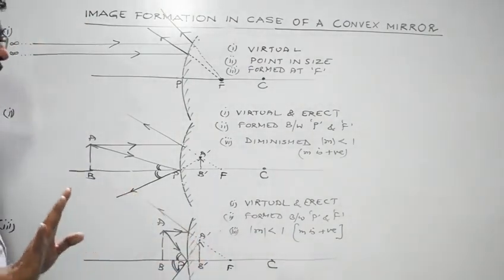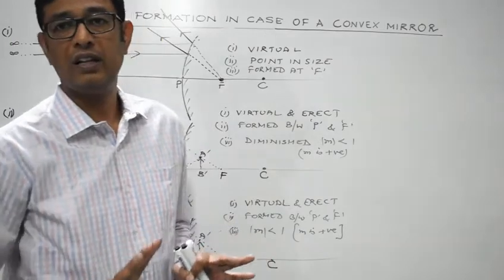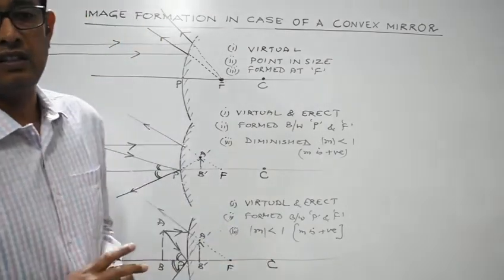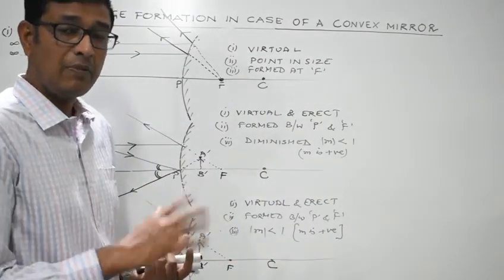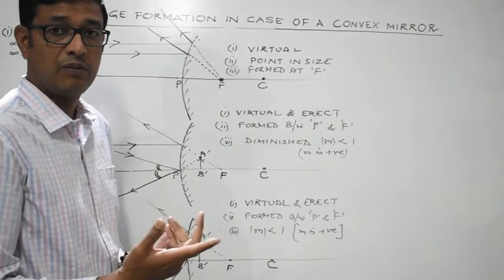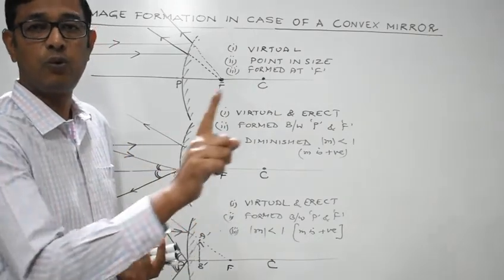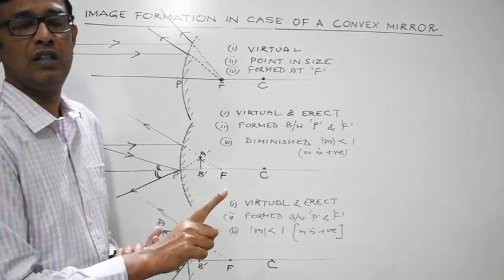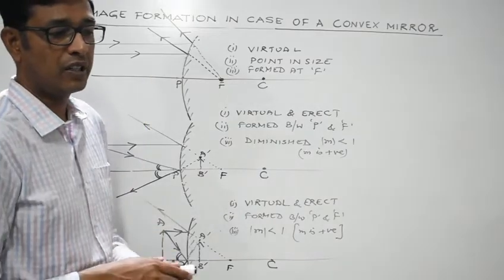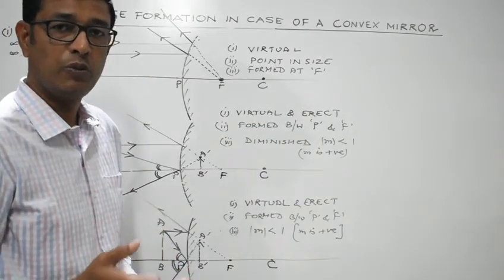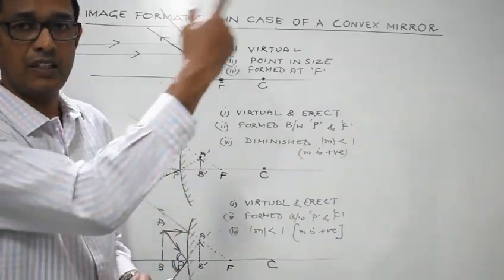In the case of a convex mirror, the image is always virtual and erect. In the case of a concave mirror, it can be virtual and erect only when the object is placed between the pole and the focus. Otherwise, the image obtained with a concave mirror is always real and inverted.